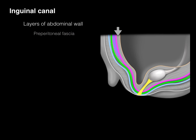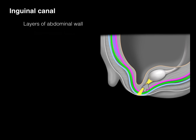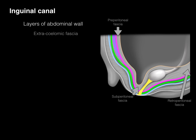Next is the preperitoneal fascia — called 'pre' because it's in front of the peritoneum. Going down below, we call it subperitoneal fascia ('sub' means below), and behind, we call it retroperitoneal fascia. Collectively, this is what we call the extracoelomic fascia, sometimes known as extracelosal fascia — all synonyms.